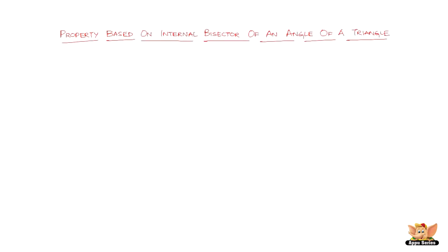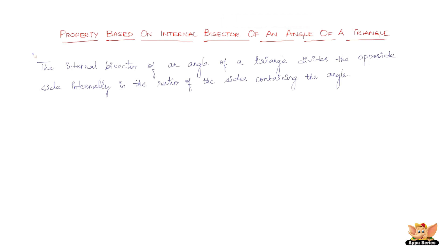In this video, let us look into an important property based on the internal bisector of an angle of a triangle. What the property says is: the internal bisector of an angle of a triangle divides the opposite side internally in the ratio of the sides containing the angle. Let me try to explain the same statement with the help of an illustration. Say we've got a triangle.